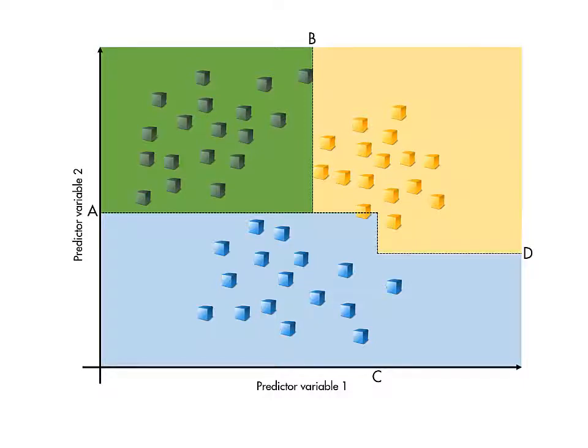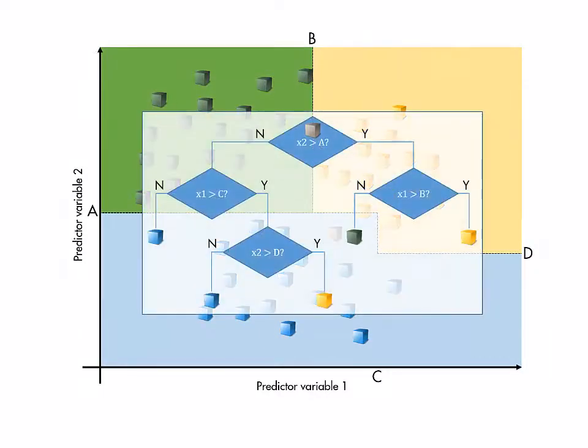Once a tree classifier is trained, making predictions is extremely quick because it requires nothing more than a handful of binary decisions.